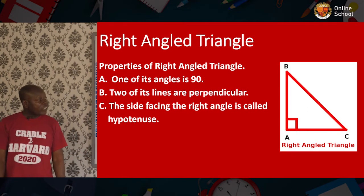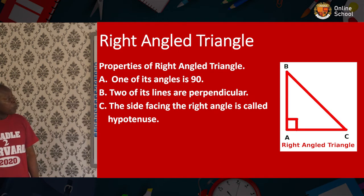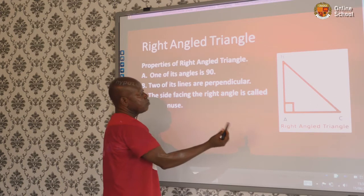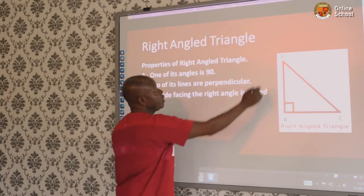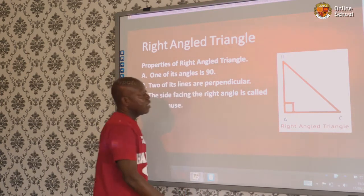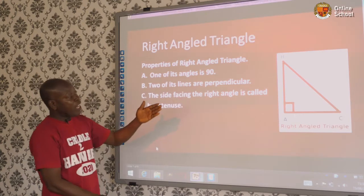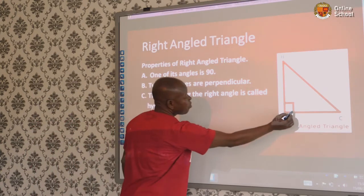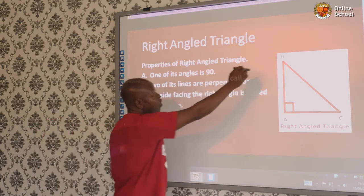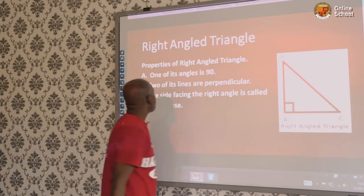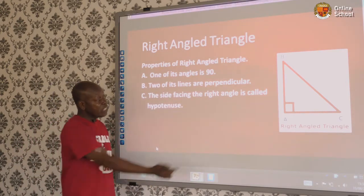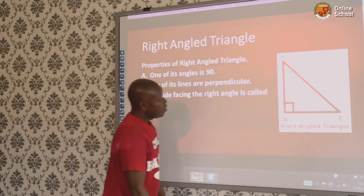The next one is the right-angled triangle. You can see the diagram. There is a vertical line going down and a horizontal line — they are perpendicular to each other and form a right angle. A right angle is equivalent to 90 degrees. One of its angles is 90 degrees, shown by the small square symbol. The longest side faces the right angle.